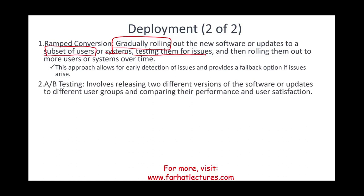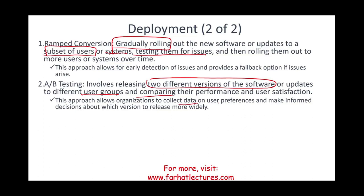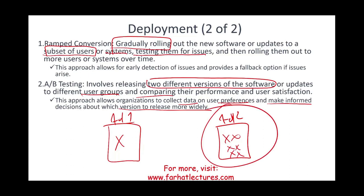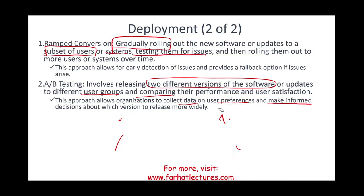Another deployment method is A-B testing — releasing two different versions of the software to different groups of users and comparing performance and user satisfaction. This allows organizations to collect data on user preference and make informed decisions about which version to release more widely. A-B testing is very common in social media marketing: you run two ads and see which one gets more clicks, then follow that strategy.